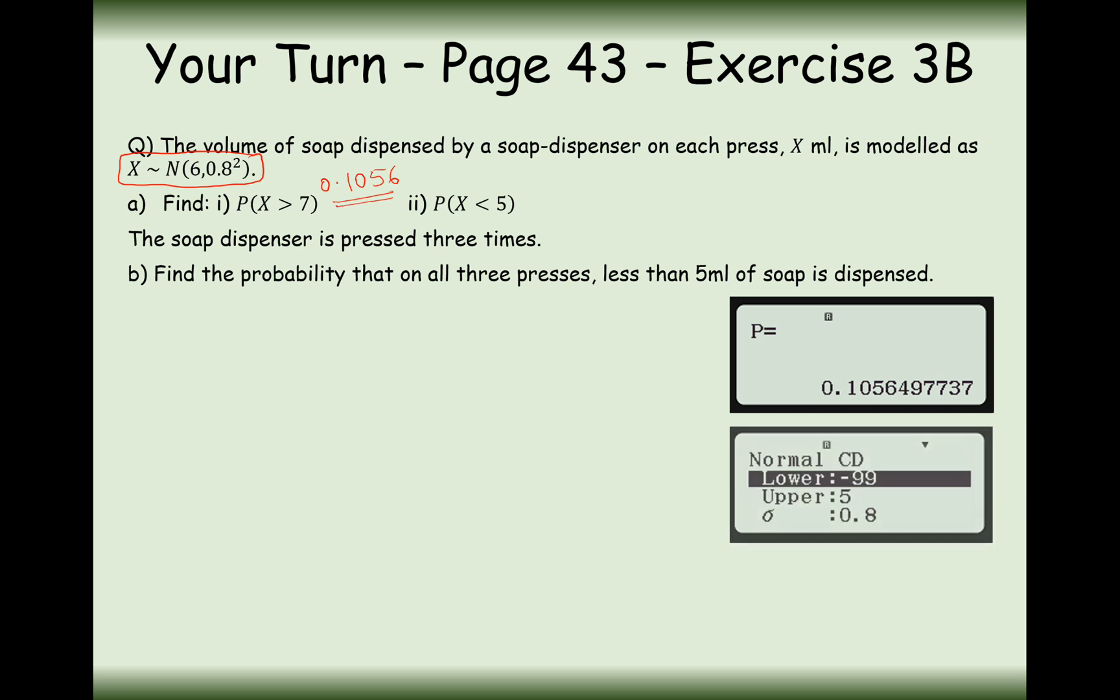And then the probability of x being less than 5—let's do exactly the same thing. Your upper boundary now is 5, your lower boundary is minus 99. We get the same answer here, which is particularly interesting. Why is that the case? This graph is perfectly symmetric. 6 will be in the centre, and we want the probability of 7 or more on one side, and 5 or fewer on the other. The same answer appears on the left and the right.